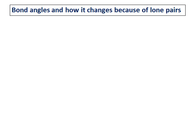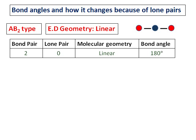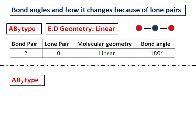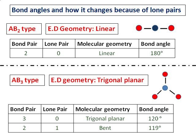This video focuses on bond angles and how they change because of the presence of lone pairs. The first type, AB2, has an electron geometry which is linear, as shown in the diagram. The second type, AB3, has an electron domain geometry of trigonal planar, as shown. This can have three bond pairs and no lone pair, and the molecular geometry is also trigonal planar with a bond angle of 120 degrees.